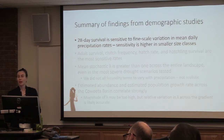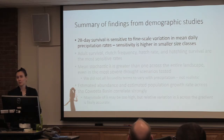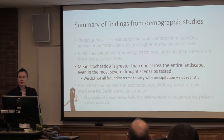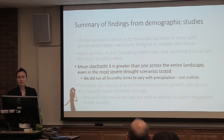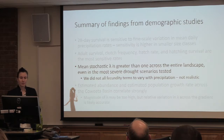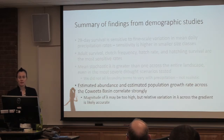So what did we actually find? Twenty-eight-day survival is sensitive to fine-scale variation in mean daily precipitation, and the sensitivity is higher in smaller size classes. Adult survival, clutch frequency, hatch rate, and hatchling survival are the most sensitive rates. Mean stochastic lambda is greater than one across the entire landscape even in the most severe drought scenarios — but we did not let all fecundity terms vary with precipitation, so the magnitude is not particularly realistic. Estimated abundance and estimated population growth across the Coweta Basin correlate pretty strongly.